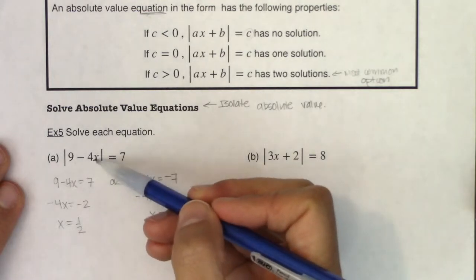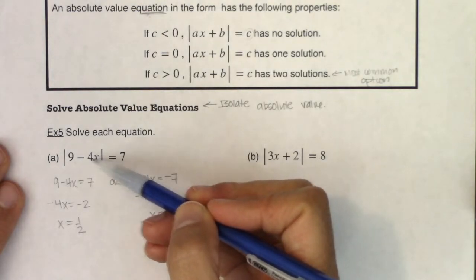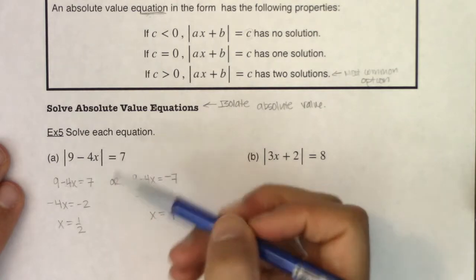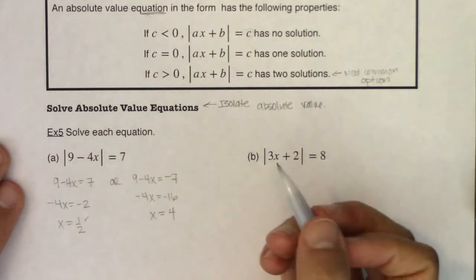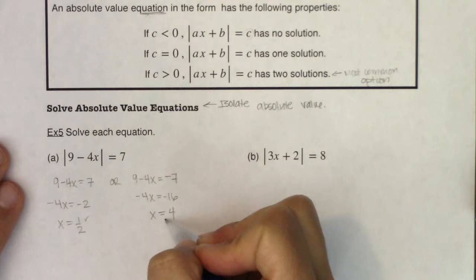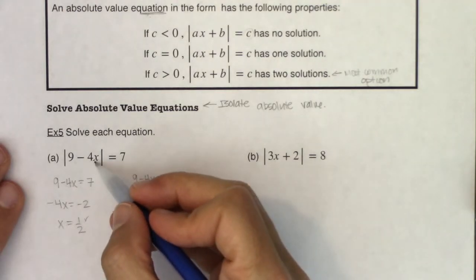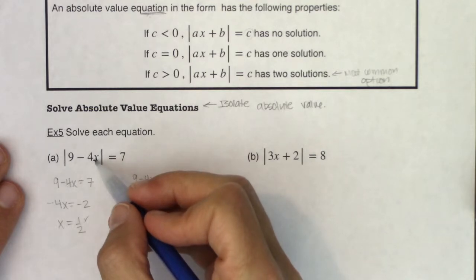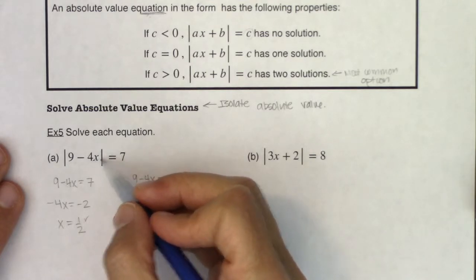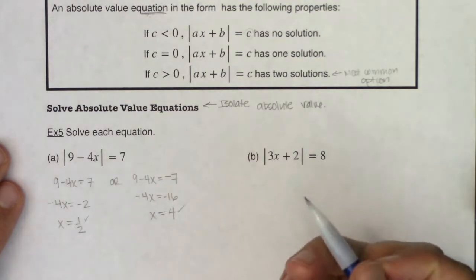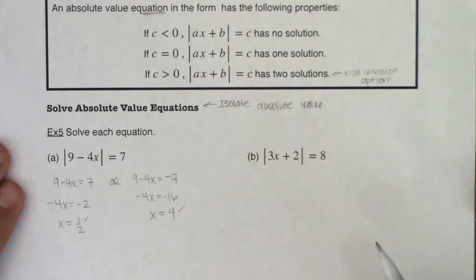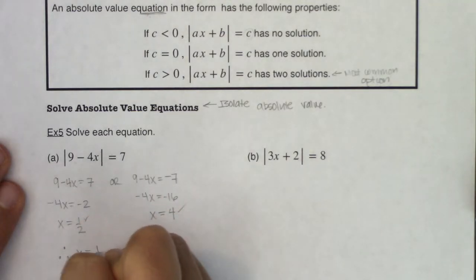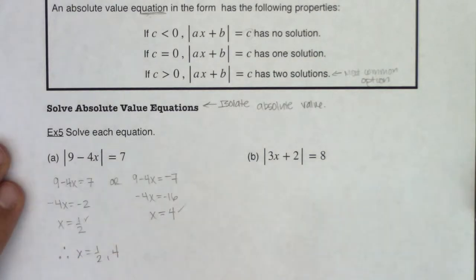Let's check these answers. If x is one half: 4 times one half is 2, and 9 minus 2 is 7 — the absolute value of 7 is 7. That works. If x is 4: 4 times 4 is 16, and 9 minus 16 is negative 7 — but the absolute value of negative 7 is still 7. That works too. So we get two answers: x equals one half and x equals 4.